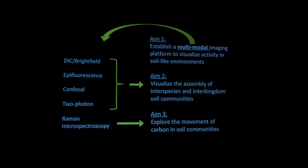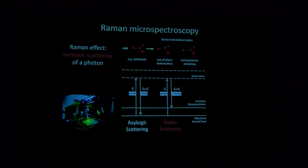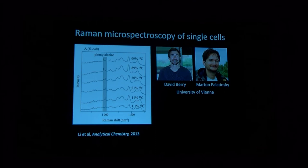But what really adds a lot more power to the system is the ability to integrate Raman microspectroscopy, because this gets us at our third aim and allows us to actually explore the movement of carbon in these communities. Raman microspectroscopy works by basically, it's a little like fluorescence imaging in that we excite our sample. And what we're measuring is the inelastic scattering of a photon. We can use the Raman effect to actually see which cells in a population have taken up, for example, an isotopic label.